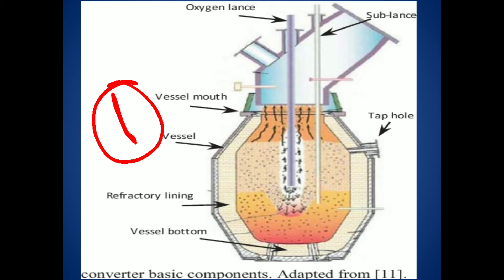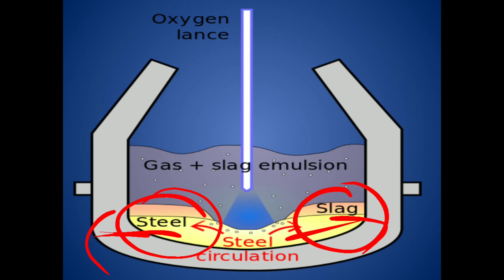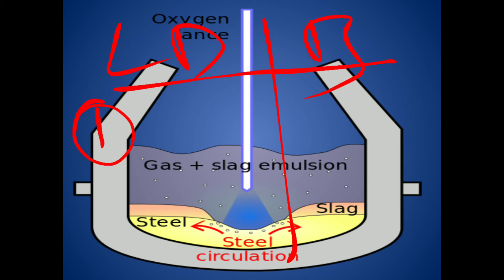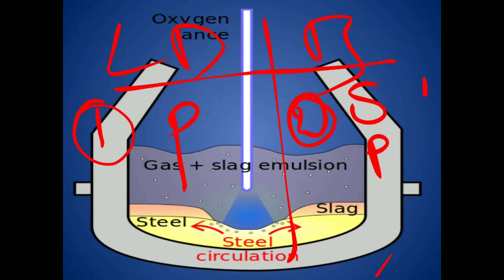Now for the differences between the Bessemer process and the LD process. First difference: in the LD process, pig iron of any composition can be used — no conditions on composition. In the Bessemer process, there are conditions: the acid Bessemer requires low sulfur and low phosphorus, while the basic Bessemer requires high phosphorus and high sulfur.